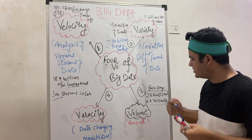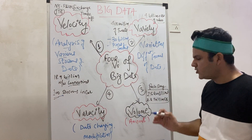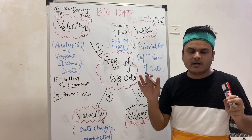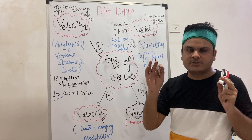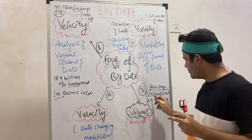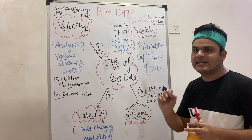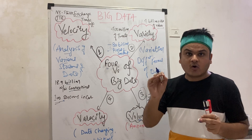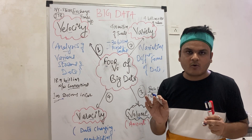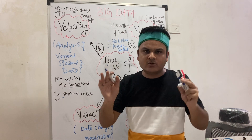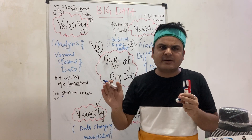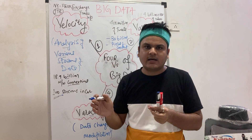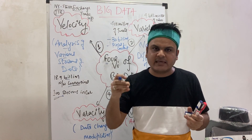The third V is volume — the amount of data. In general, the approximate amount of data generated each day is around 2.5 quintillion bytes, which is around 2.3 trillion gigabytes. You can imagine how industries and big companies are managing and analyzing that kind of data to make it useful for technology and services.